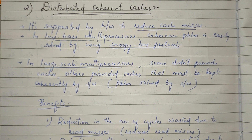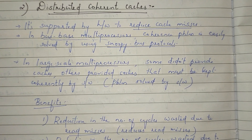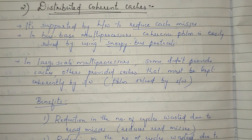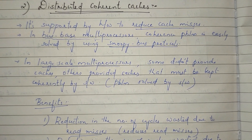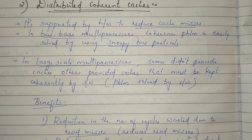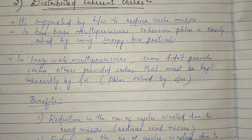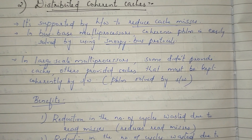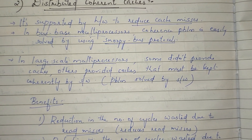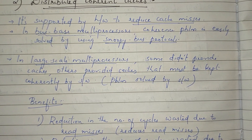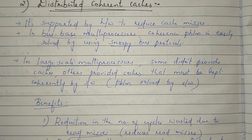This Snoopy Bus Protocol — we are using the Inconsistency. So, we are using the Cache Coherent. If we are using the Cache Coherent, we are using the Snoopy Bus Protocol. This is Bus-based multiprocessors.